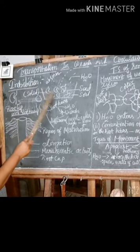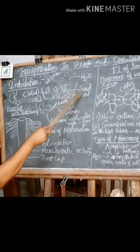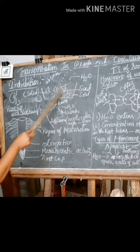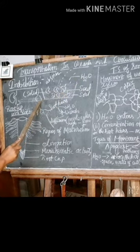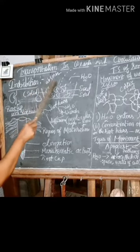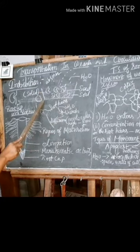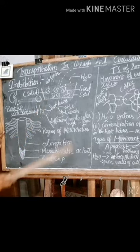Imbibition: when you sow seeds in the soil and sprinkle water, the seeds start to absorb the water and swell up. After some days they begin to grow. Here the seed is the solid — the solid absorbs water and swells up. You can see this in examples like dry seeds or dry grapes.